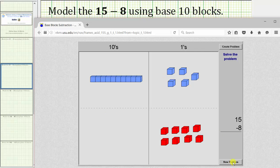Let's look at one more example. We will now model 15 minus 8 using the base 10 blocks. We first model 15 using the blue base 10 blocks: 15 equals 1 rod and 5 units. Then we model 8 using the red base 10 blocks: 8 is equal to 8 units.